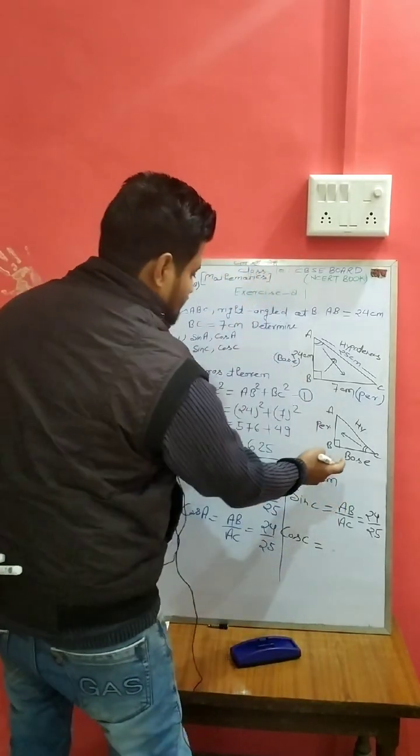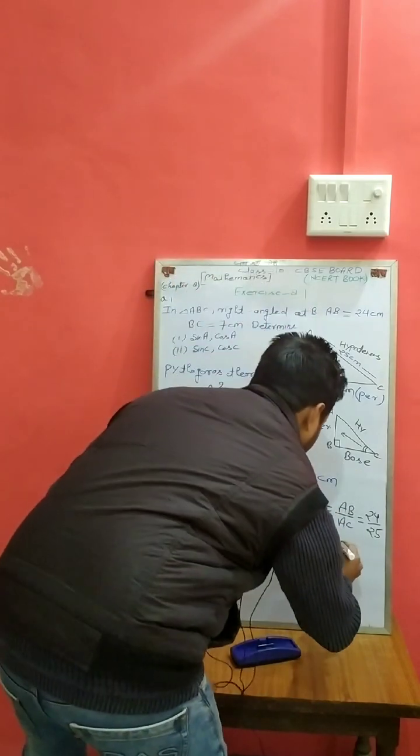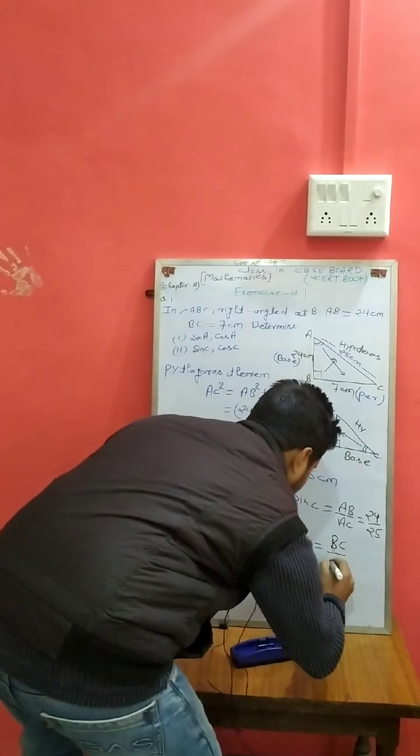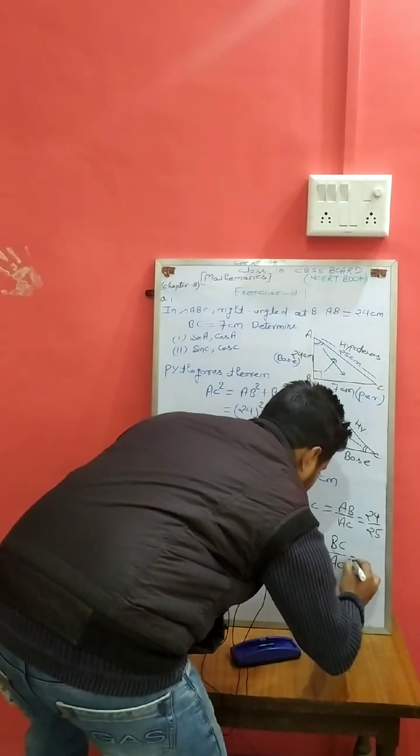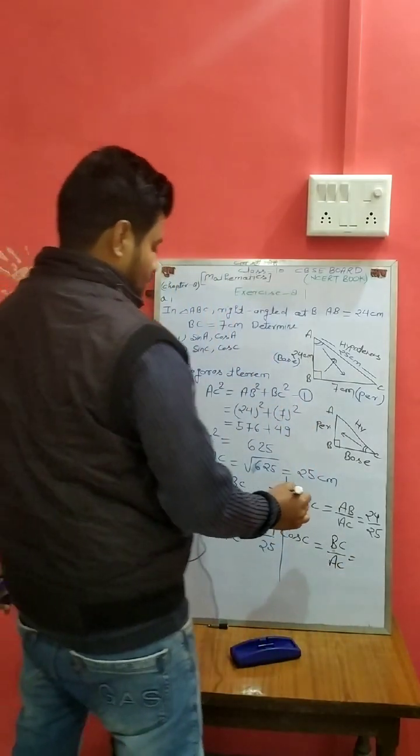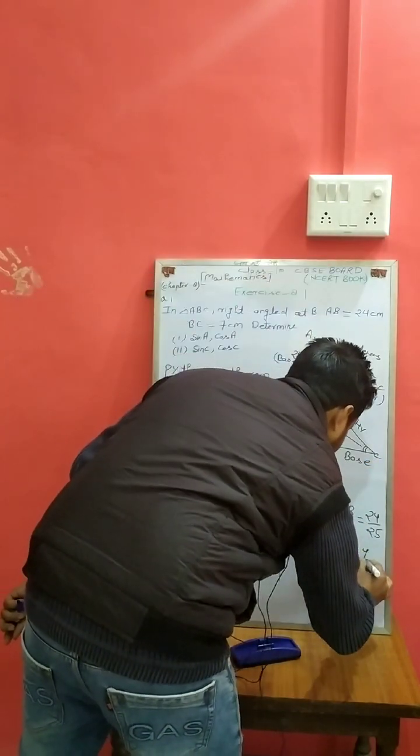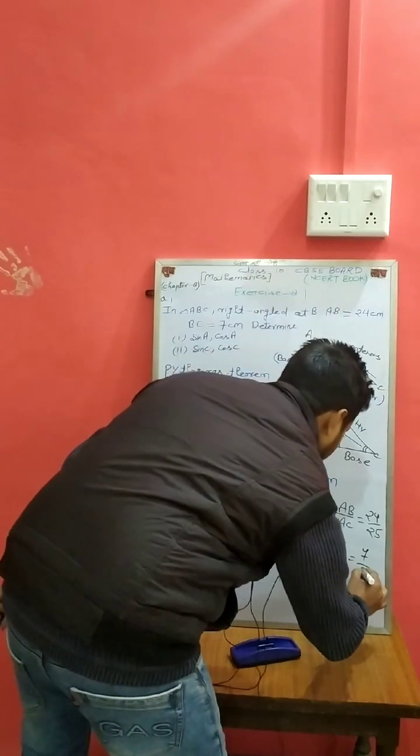And cos C: base upon hypotenuse. Base upon hypotenuse AC. BC upon AC, which is 7 upon 25.